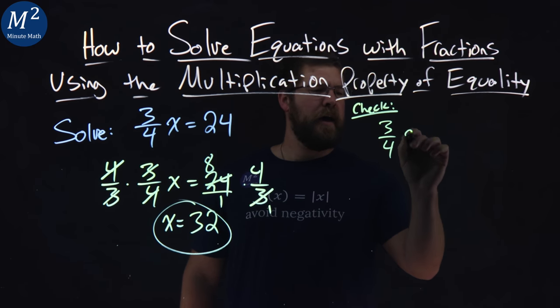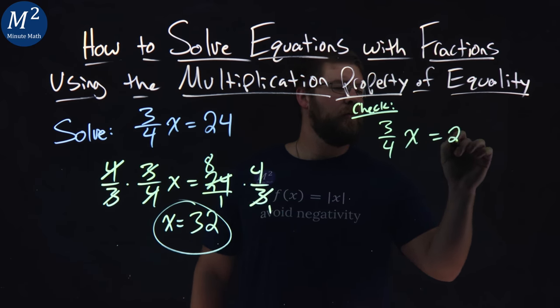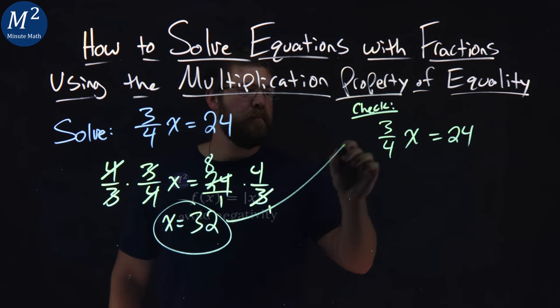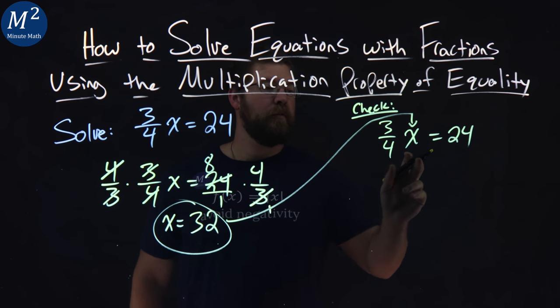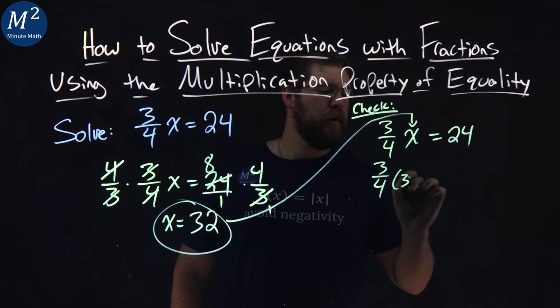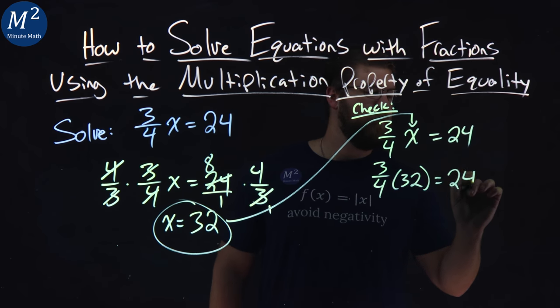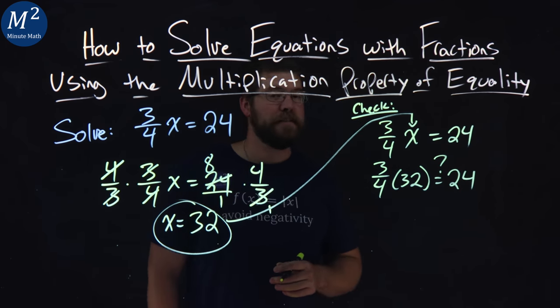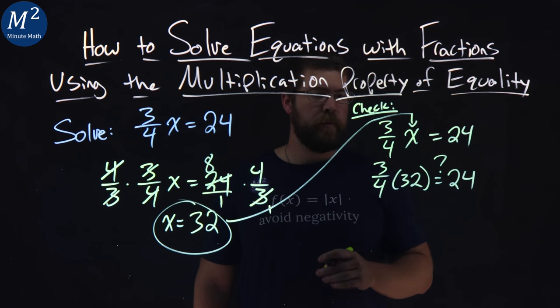3/4 here, x, we rewrite our equation, equals 24. Substitute 32 in for x. 3/4 times 32 equals 24. On the left-hand side, equal here. Alright?